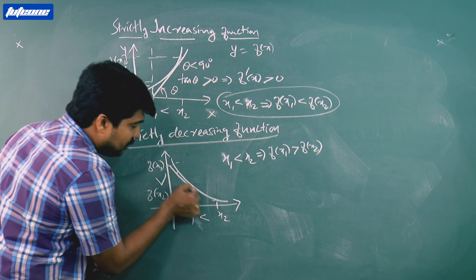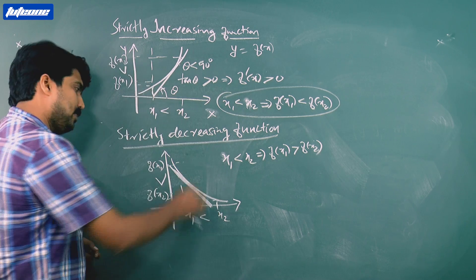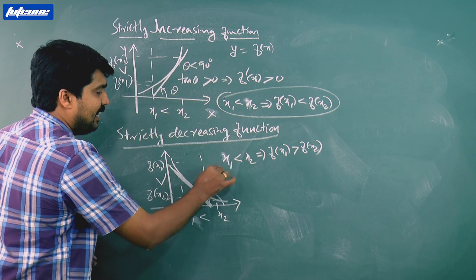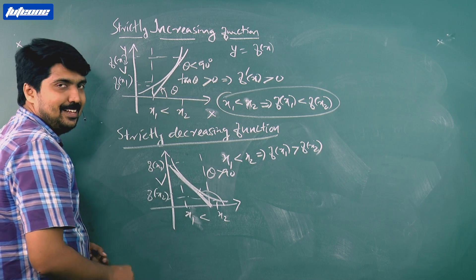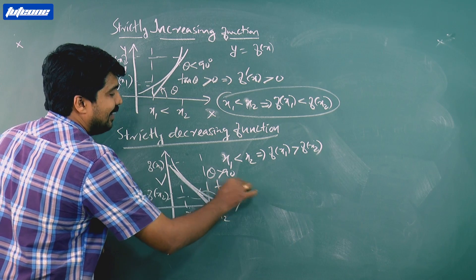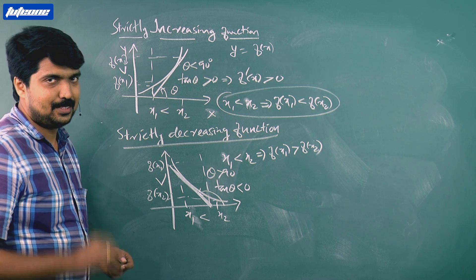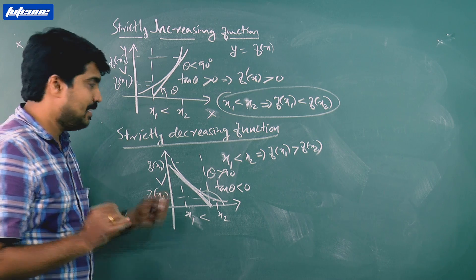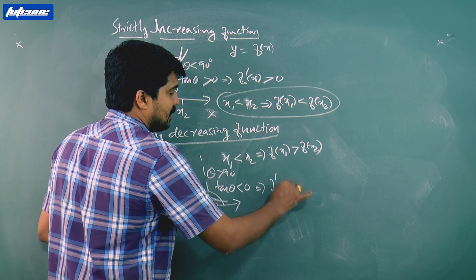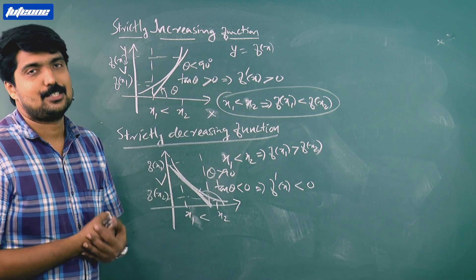If you draw any tangent to the decreasing function, the angle is always greater than 90 degrees. That means the slope of the tangent, tan theta, is always negative. Therefore, f'(x) is less than 0 for a strictly decreasing function.